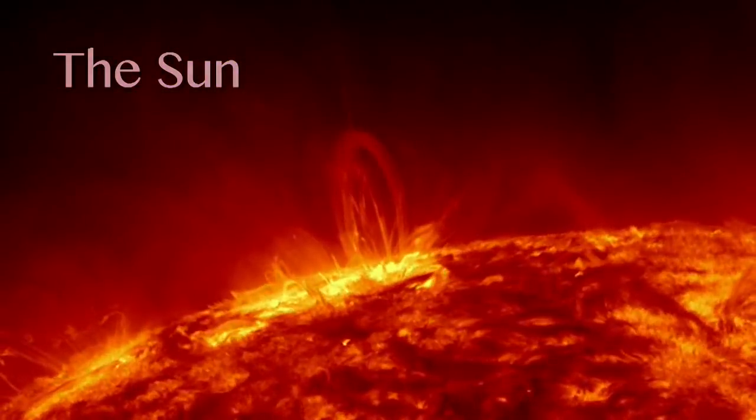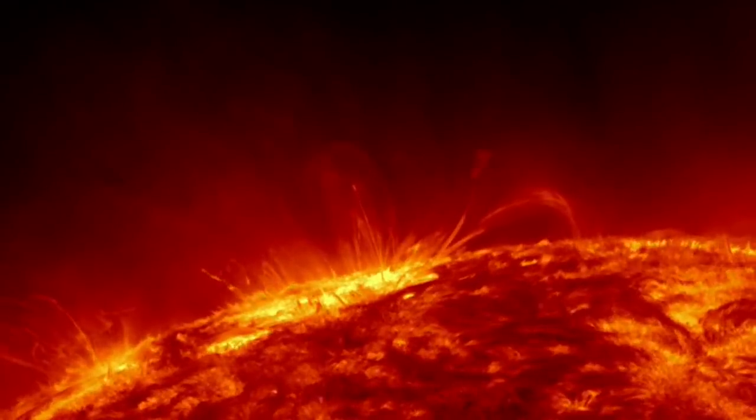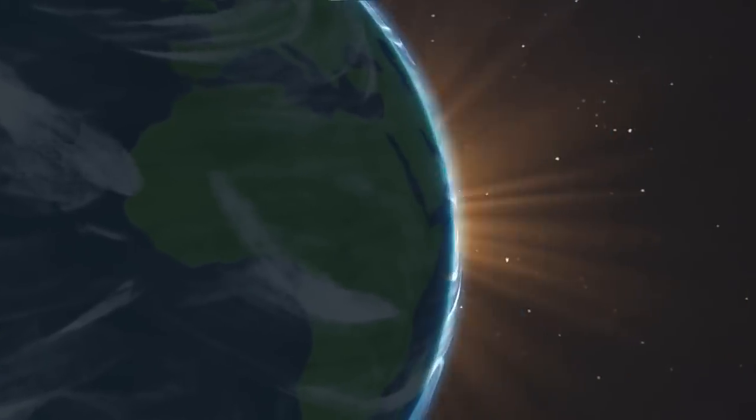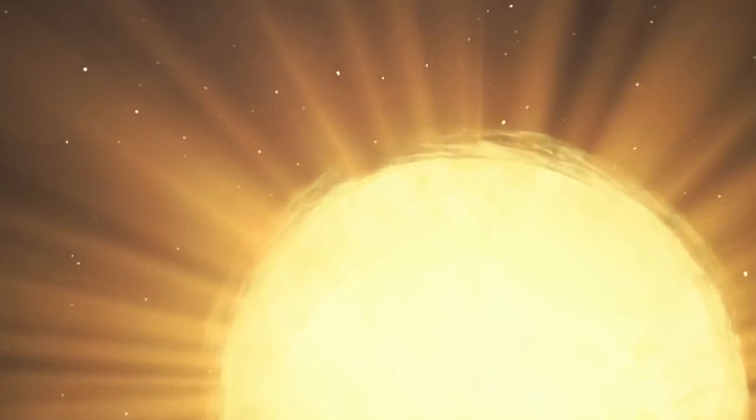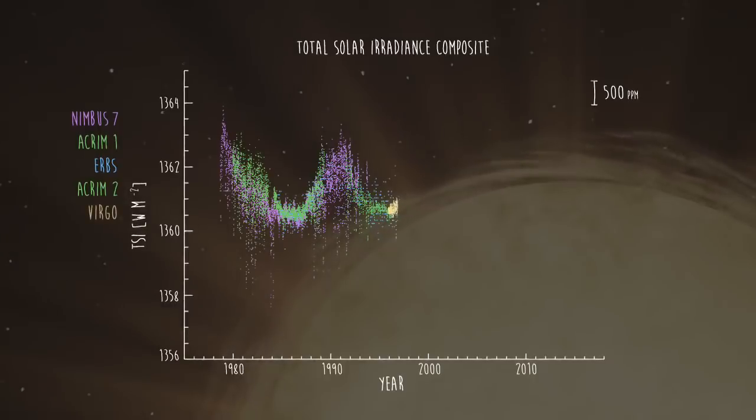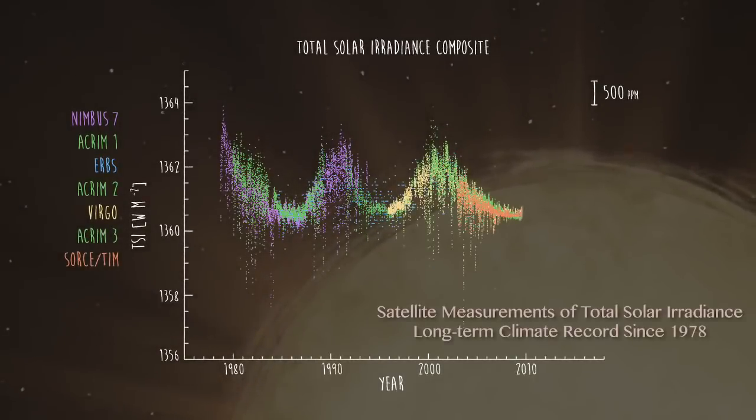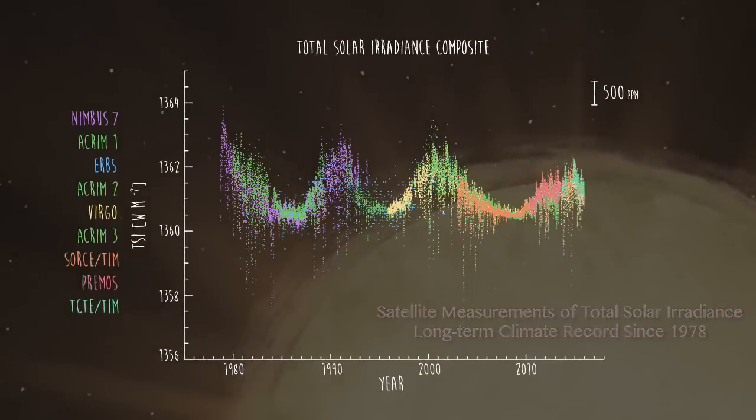For a long time, scientists have known that the Sun's energy changes in a fairly regular solar cycle. The period from minimum to maximum and back to minimum is about 11 years, but even with those cycles, there's very limited variation in total energy output. These are solar energy measurements collected by a variety of missions over the years.